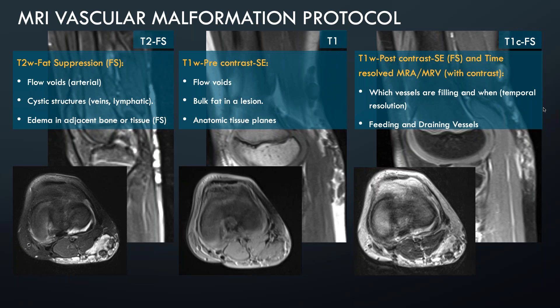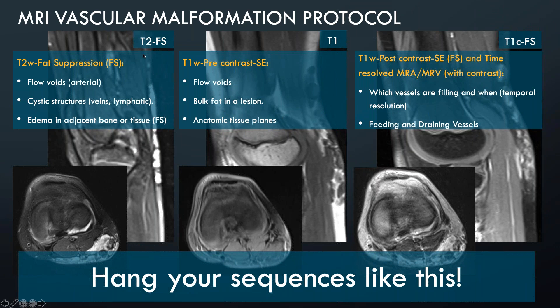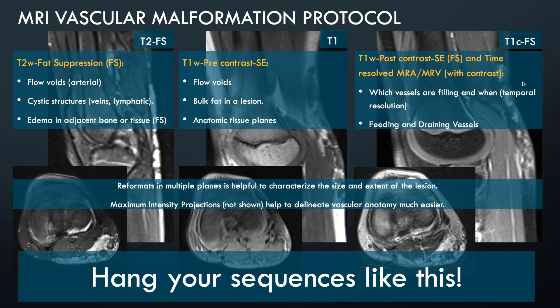I recommend hanging all your sequences with T2 at the left side of your monitor, T1 in the middle, and T1 post-contrast on the other side — it helps keep everything straight, and it'll be how I show every case in this first portion. Reformatting in multiple planes is always helpful to characterize anatomic planes of the lesion. Maximum intensity projections, which highlight the brighter voxels in cross-sectional imaging, help delineate vascular anatomy from other tissue structures much more easily.